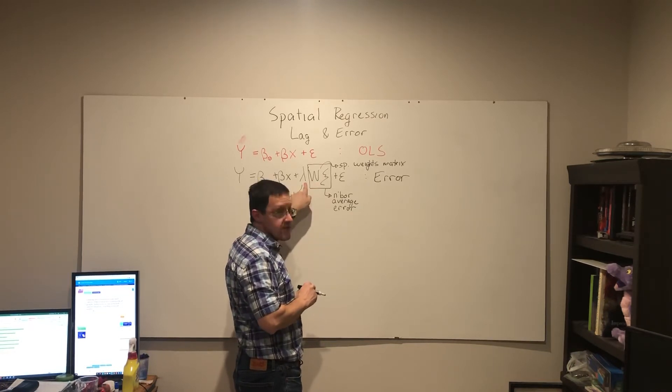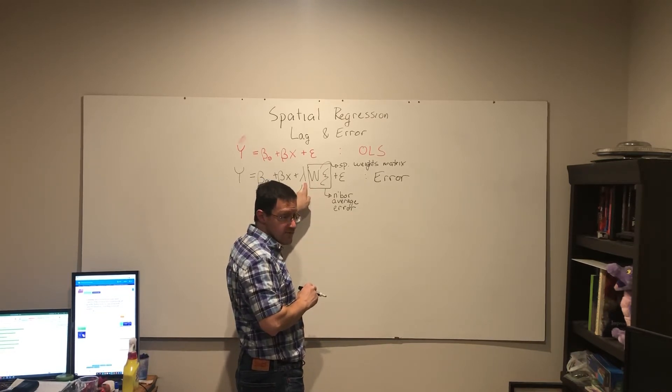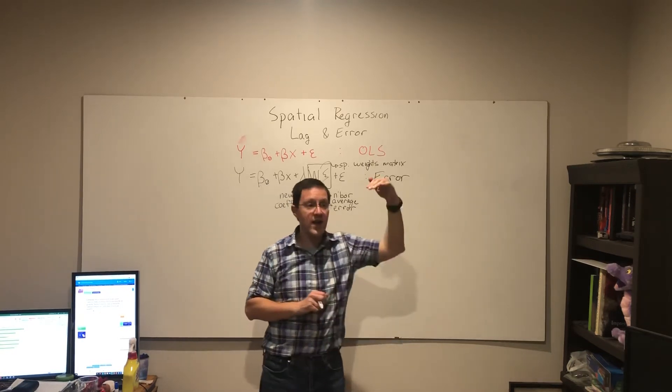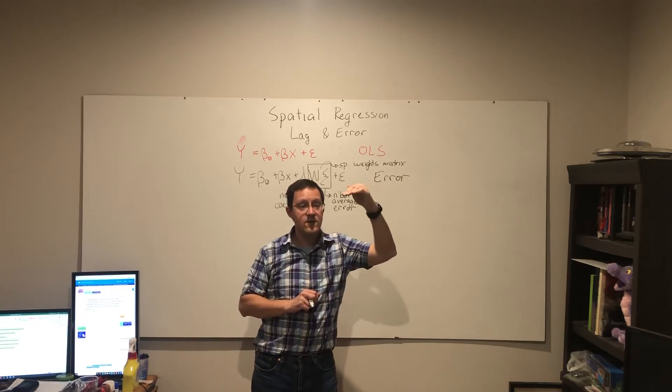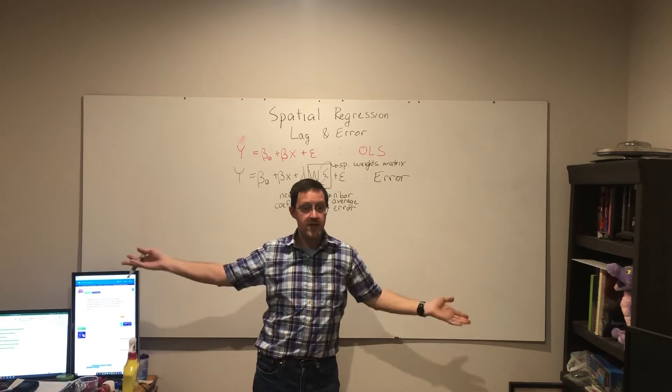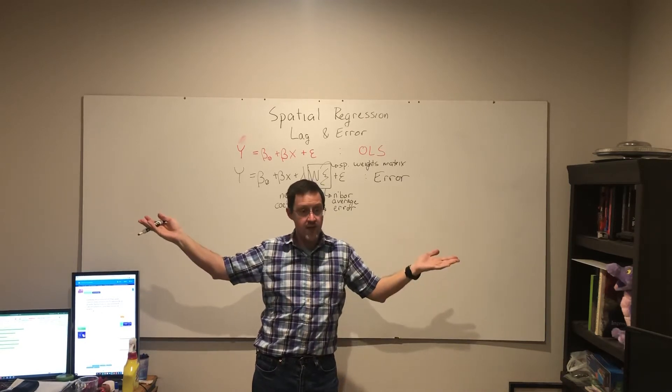That means if lambda is positive, then I'm going to expect a higher rate of COVID, the higher dependent variable in Mon County because of the errors in the average of the neighbors.